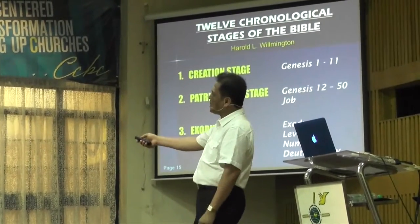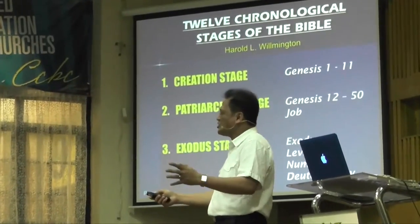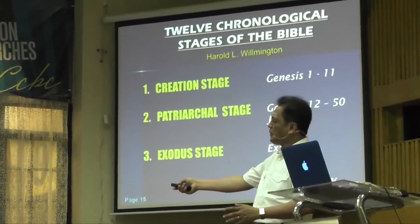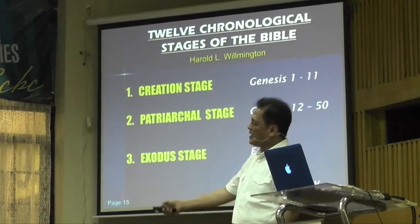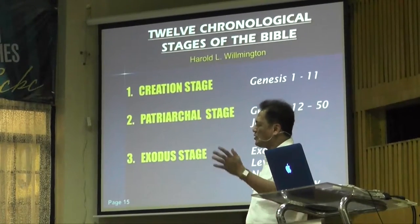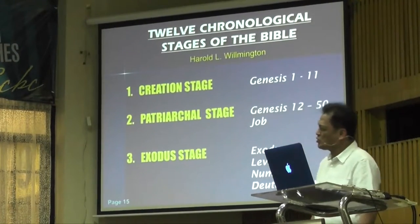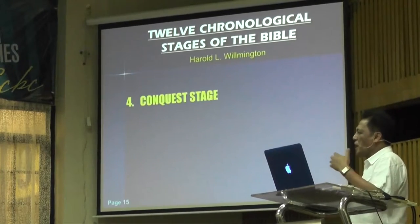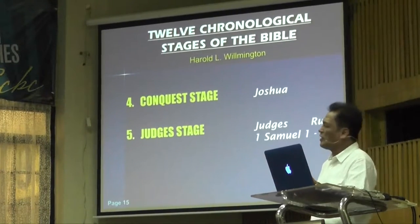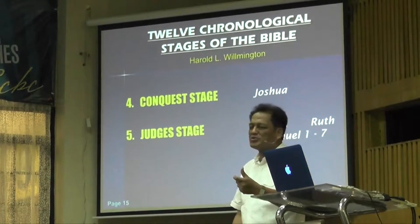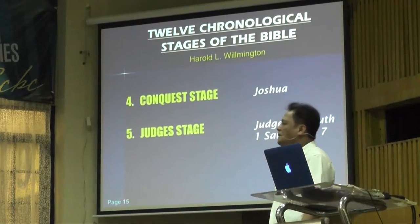If you're reading the creation stage, you're just reading 11 chapters of the book of Genesis. The patriarchal stage is just Genesis 12 to 50 and the book of Job. And then the Exodus stage — of course, Exodus, Leviticus, Numbers, and Deuteronomy. And then you have Conquest — just one book. Judges — three books. And just, of course, part of 1st Samuel.